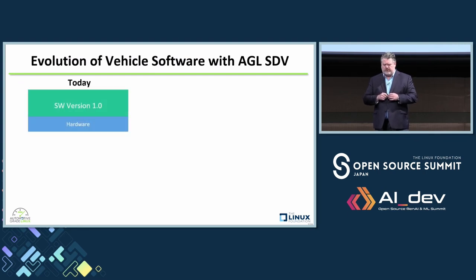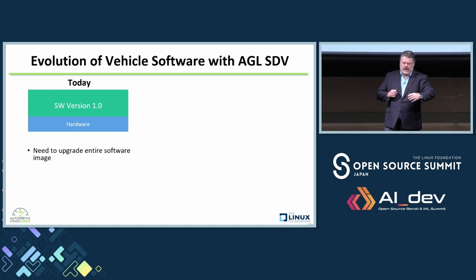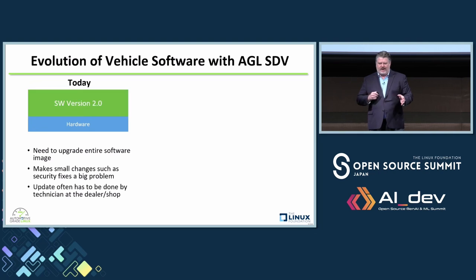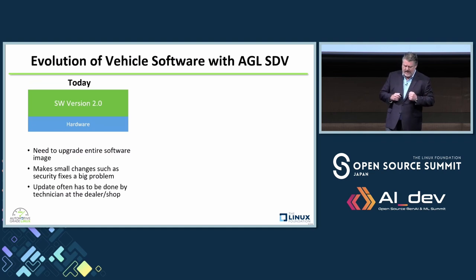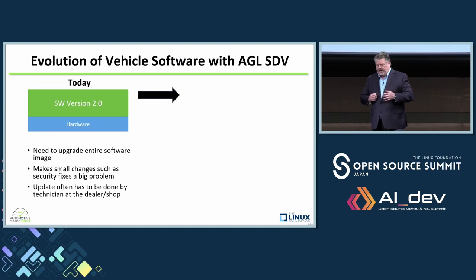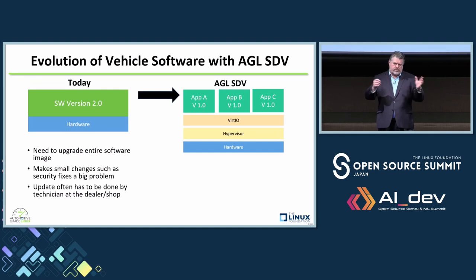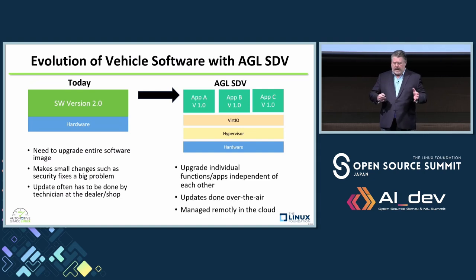Another really good promise about SDV is software updates. Today, when you want to update software from version 1 to version 2, you have to recompile the entire software and re-download it to the car — and most of the time it's not over the air. Some manufacturers are starting to do that, which is great to see. With SDV, it's possible to update individual applications — whether a single application in a container, or a bigger environment like your entire application user space. The ability to do this exists today.